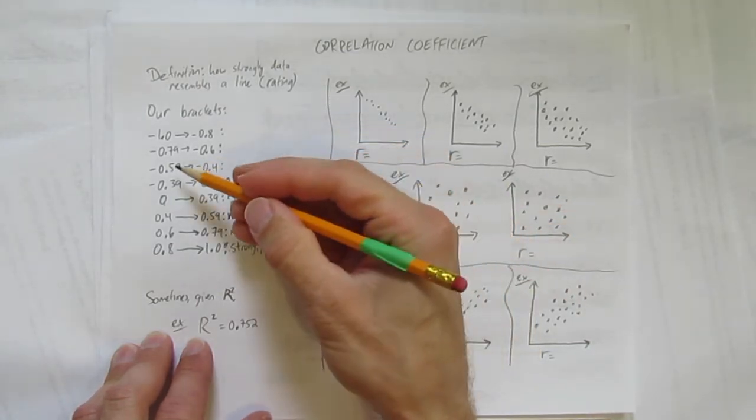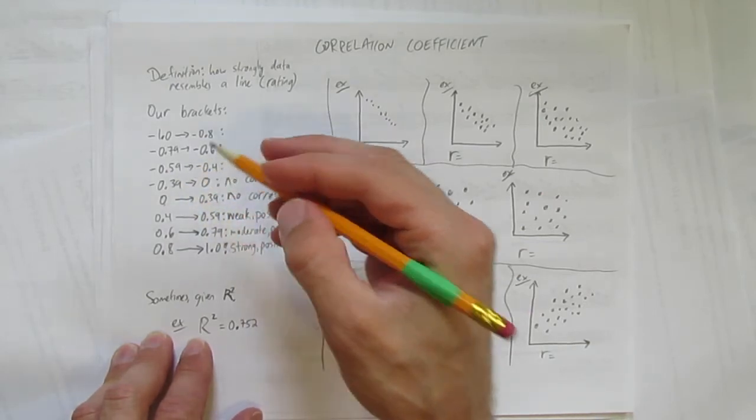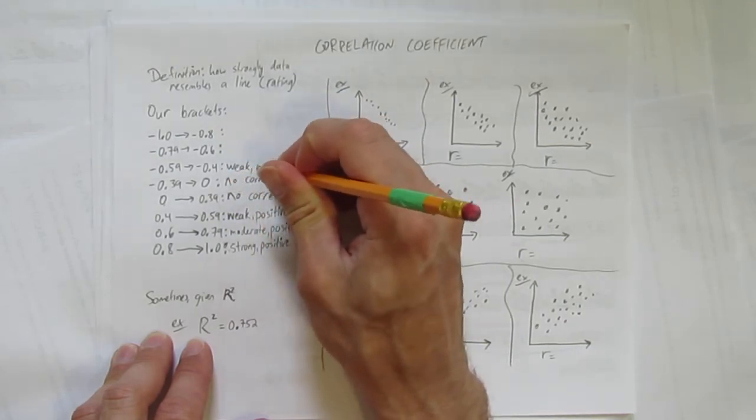If you're in that negative 0.59 to negative 0.4, think between negative 40 and negative 59%, we'll call that weak negative correlation.